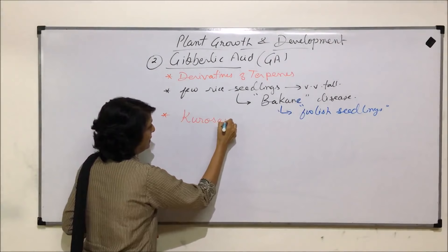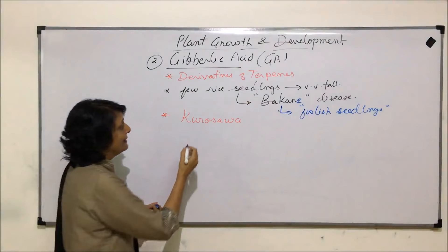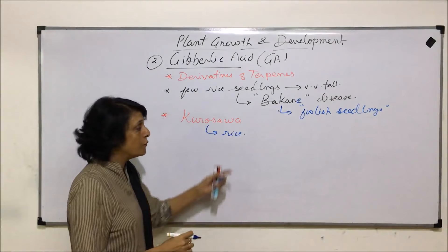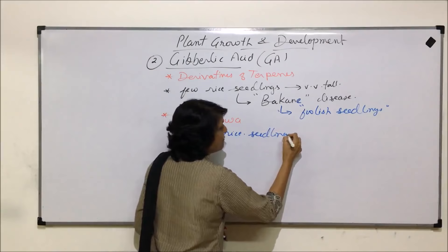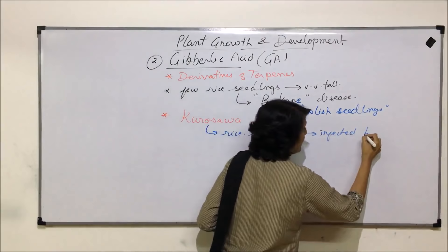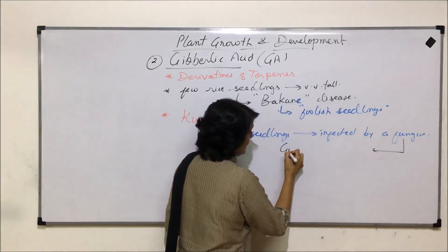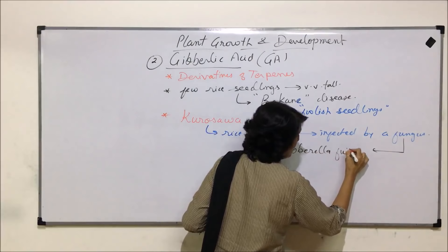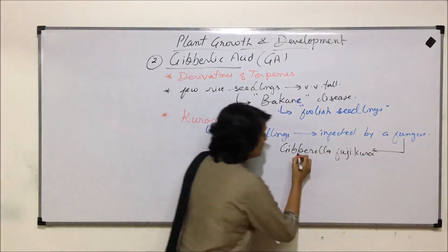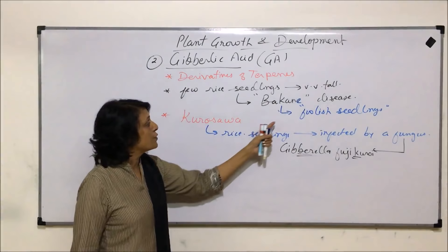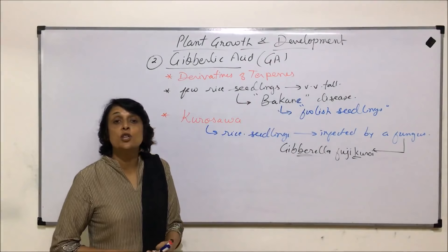Scientist Kurosawa observed these plants and found out that the rice seedlings which were exceptionally tall were infected by a fungus. When the fungus was identified, it was found to be Gibberella fujikuroi. And so the active chemical responsible for this different behavior of the plant was called gibberellins.